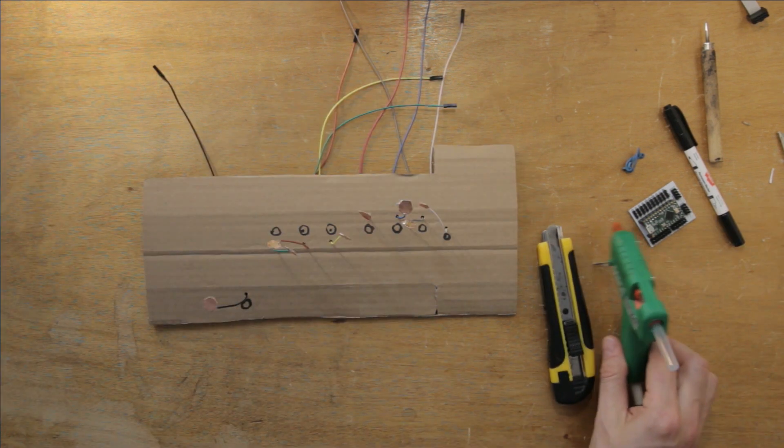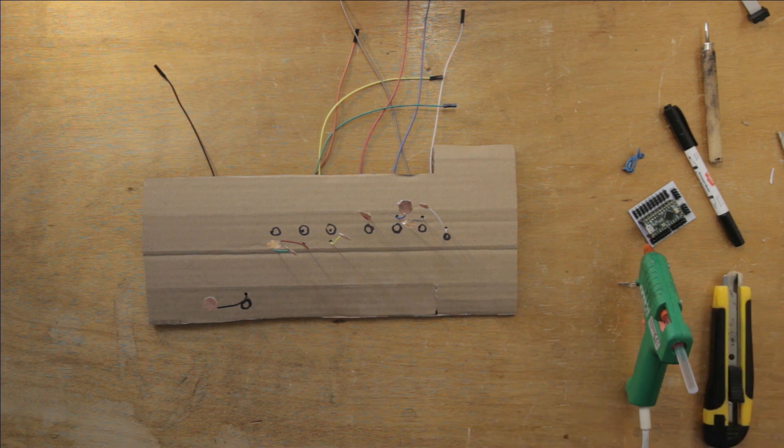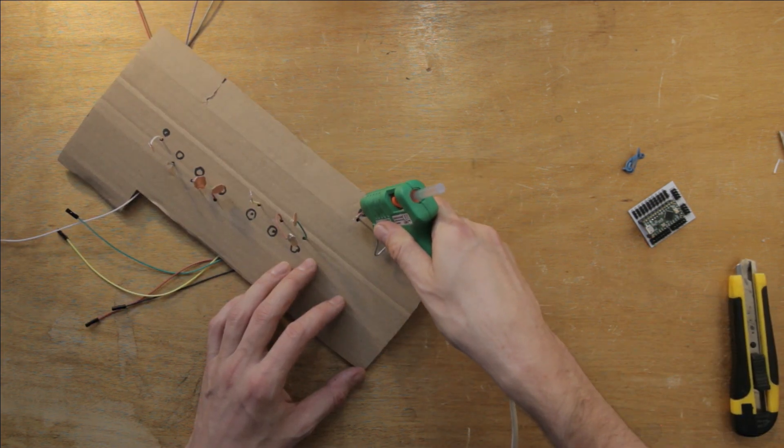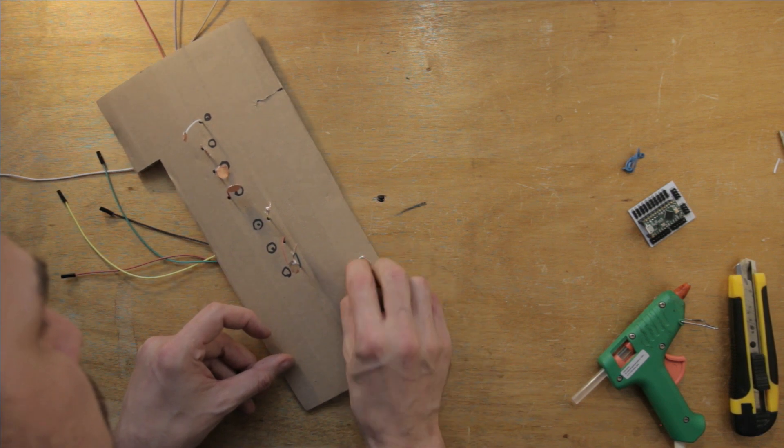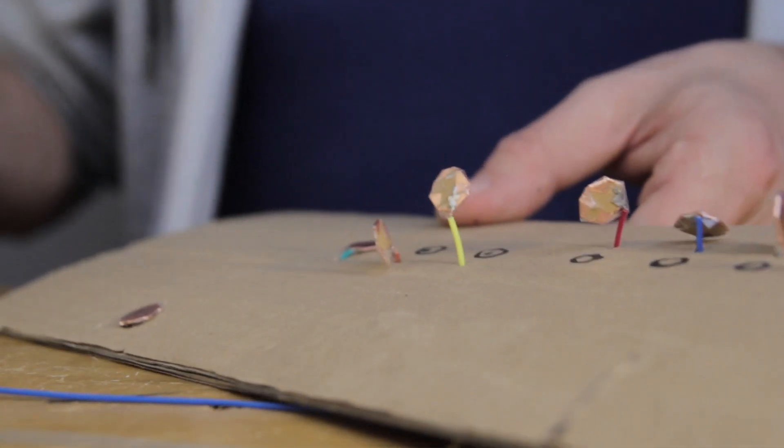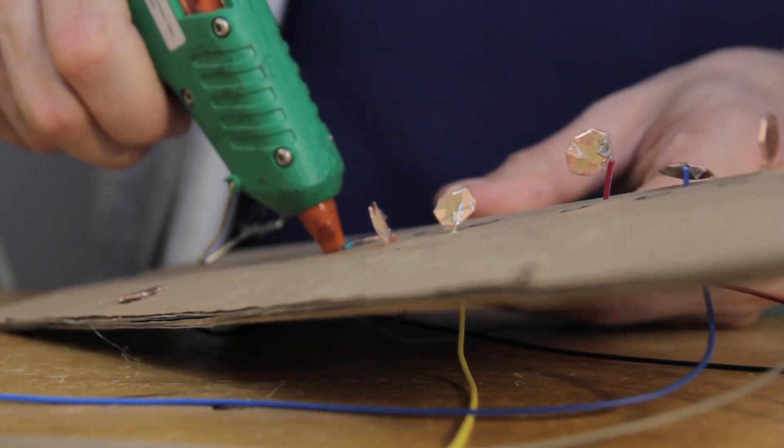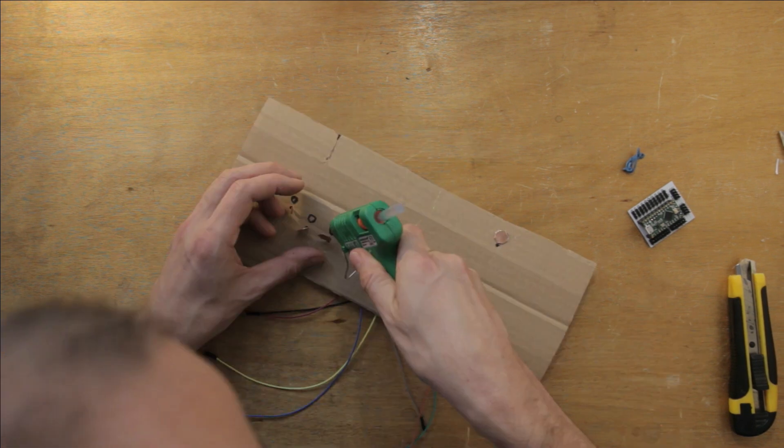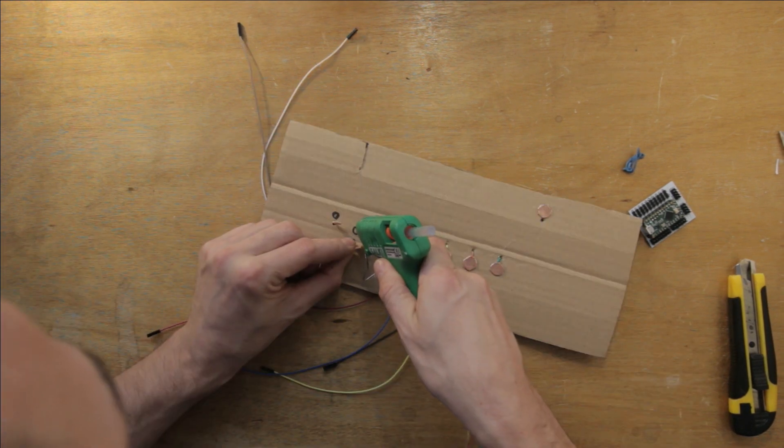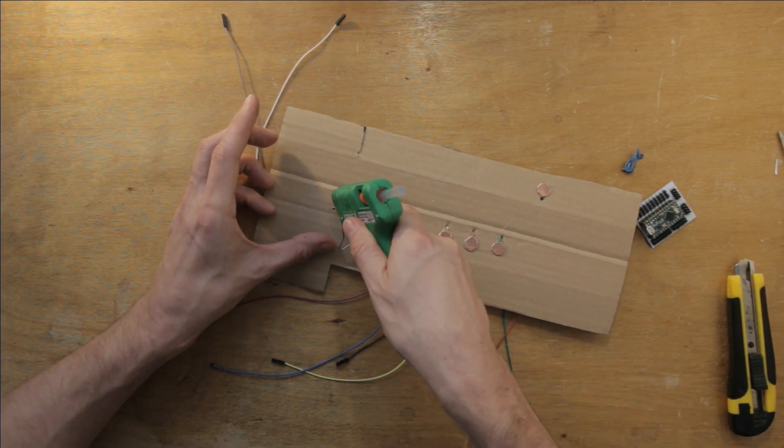Now we'll attach the keys to the cardboard structure. I'm using hot glue, which is easy and fast to use, but you can use whatever you have on hand. Glue, double-sided tape, whatever. So I'll stick down each individual key with a glob of glue, and then I'll also put a bit of glue into the cable hole to stabilize the cable. Then I'll repeat, and repeat, and repeat until all the keys are attached, like this.